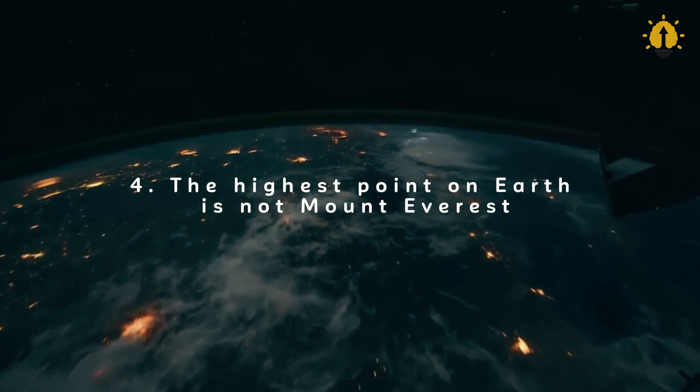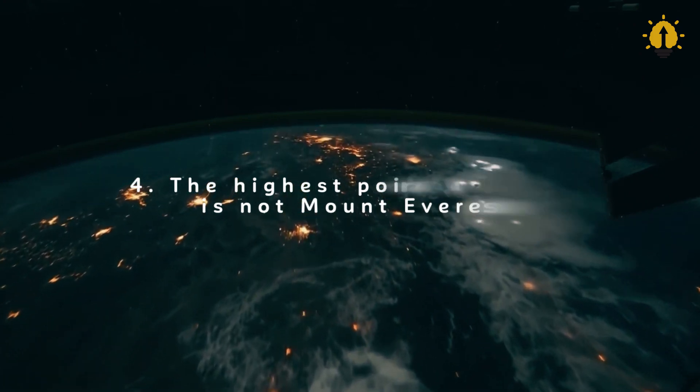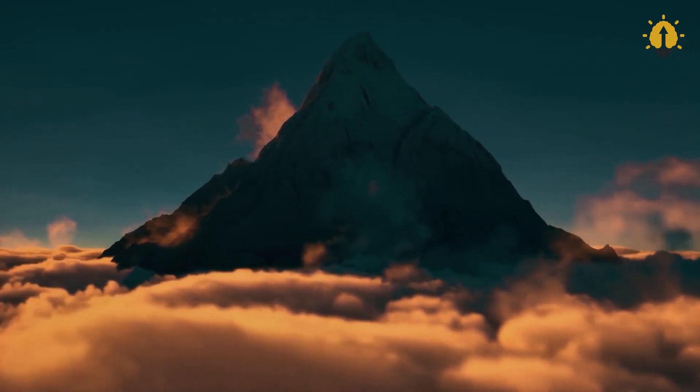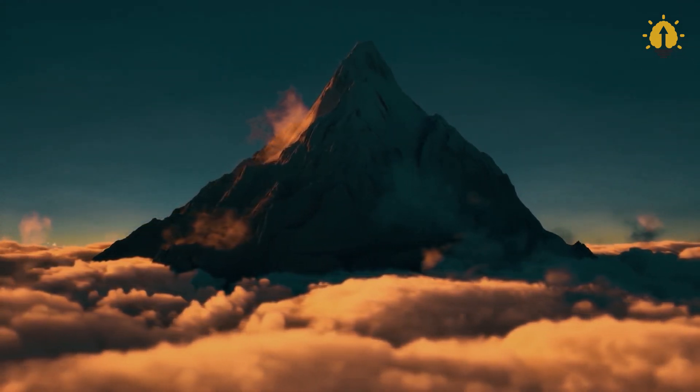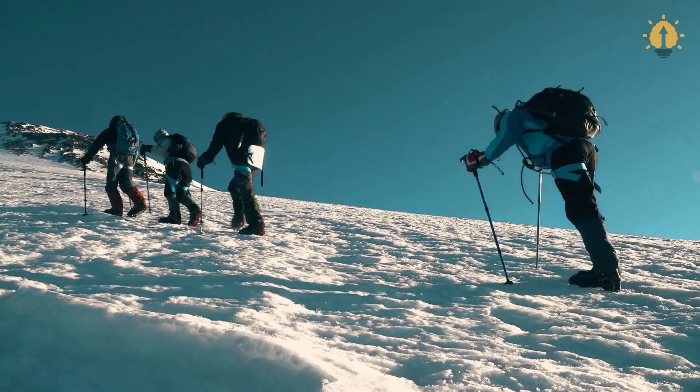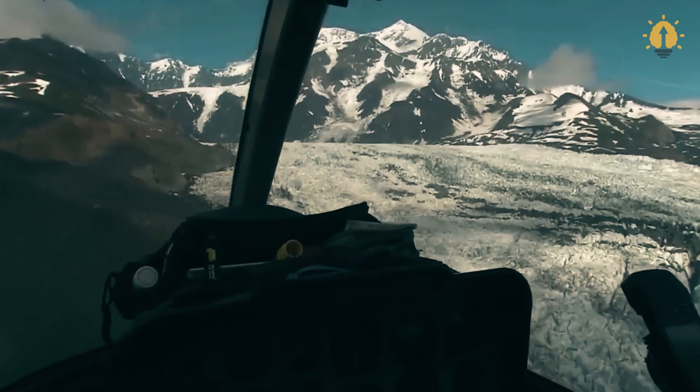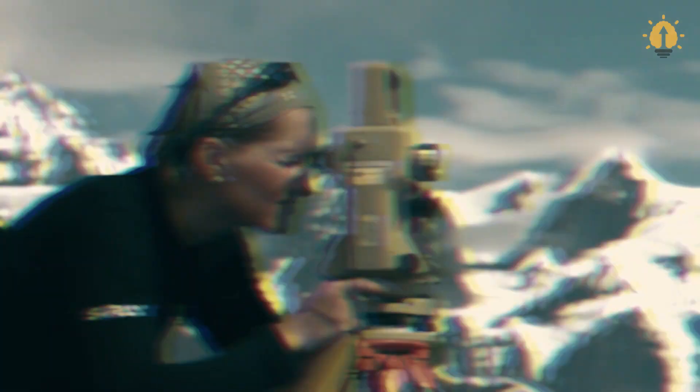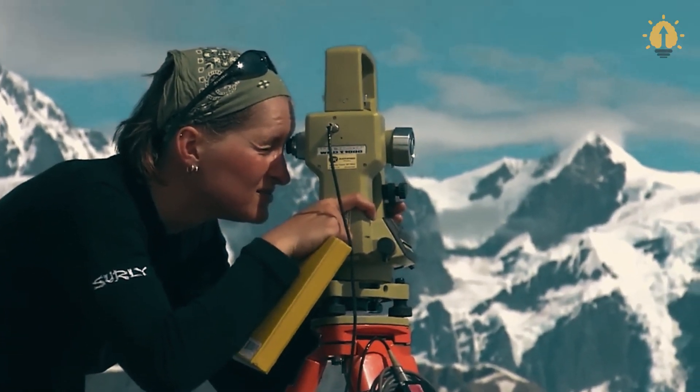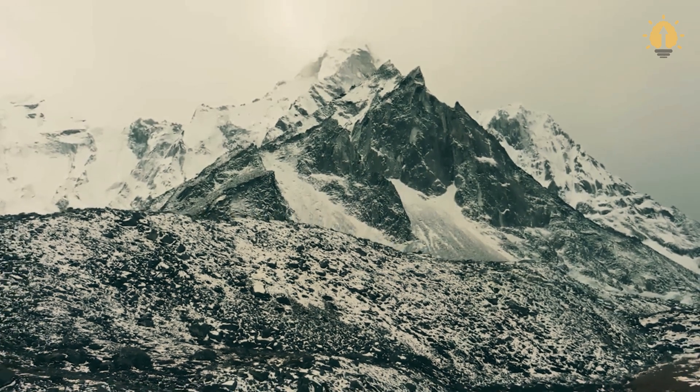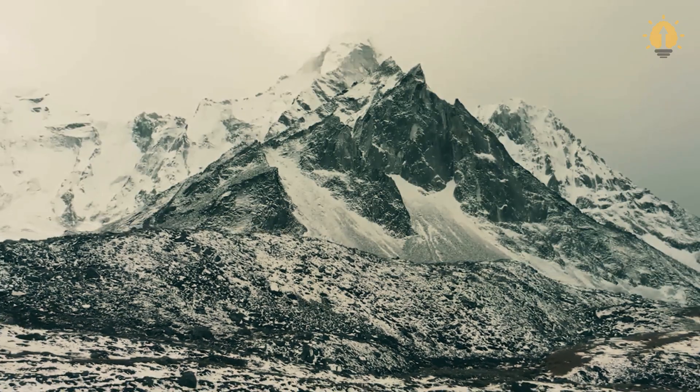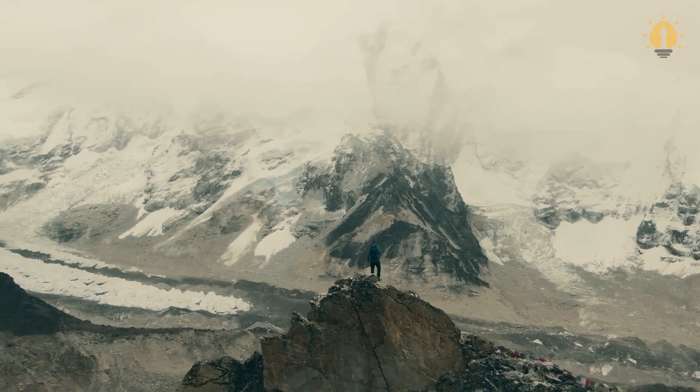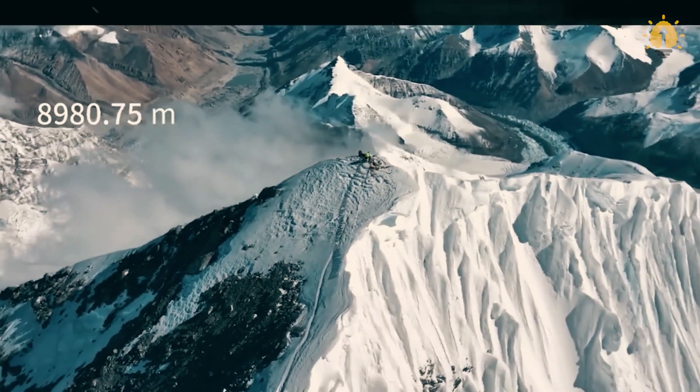Number 4: The highest point on Earth is not Mount Everest. You were probably taught at school that Mount Everest is the highest mountain in the world, which is true. But did you know that this doesn't mean that Mount Everest is also the highest point on Earth? This title actually belongs to Chimborazo, a volcano located on the Cordillera Occidental, one of the two main mountain ranges of the Andes in Ecuador. So, how is it possible that the highest mountain on Earth and the Earth's highest point are two different things? As you're probably already guessing, the reason once again lies in the irregular shape of our planet.